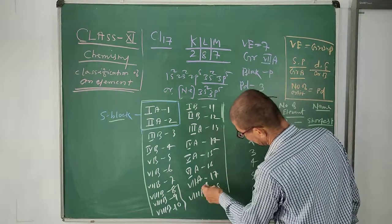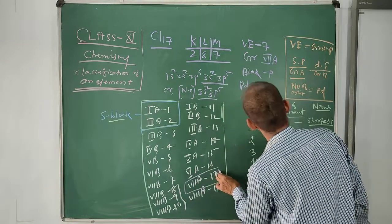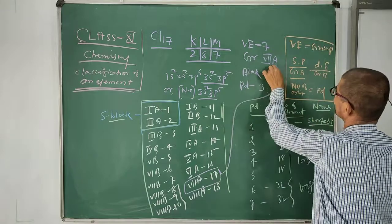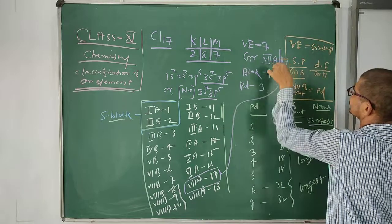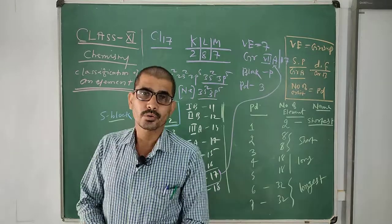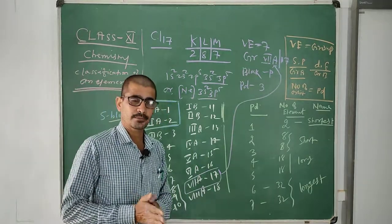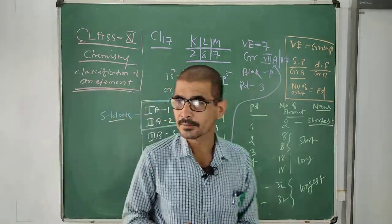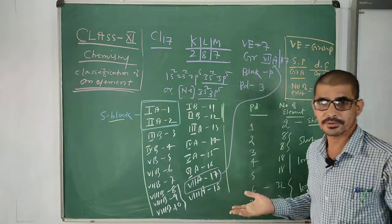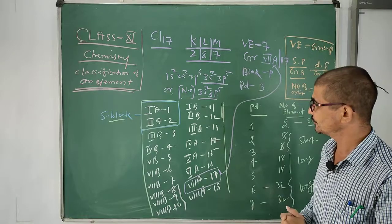Just look here: this is called 7, and 7 means 17. So you can write 17 here as well. So chlorine is placed in group 7A (or 17), period 3, block P in the modern periodic table. This is the way for calculating position in the modern periodic table.